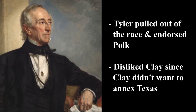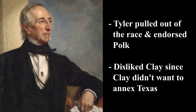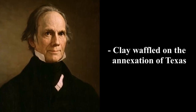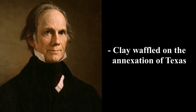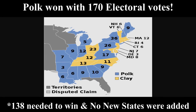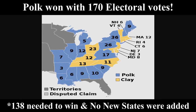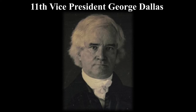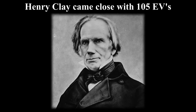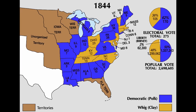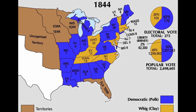In a major move, Tyler pulled out of the race endorsing Polk, since he, like Tyler, wanted to annex Texas. Polk fully endorsed the idea of Manifest Destiny while Clay waffled on the annexation of Texas. The winner was James K. Polk, becoming the 11th President in American history. Polk won in a close race with 170 electoral votes against Henry Clay. George Dallas became the 11th Vice President. Henry Clay came close with 105 electoral votes. This election was by far the closest one in a while, with many swing states like New York having razor-thin margins.